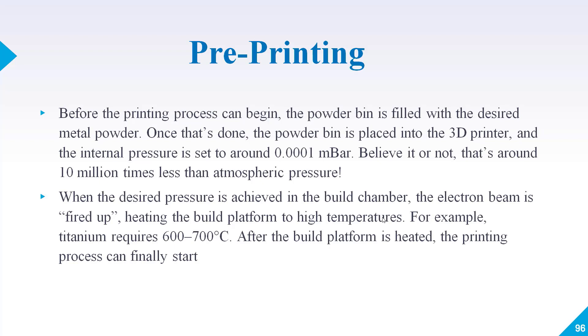When the desired pressure is achieved, once you achieve your desired pressure in the build chamber, the electron beam is fired up. The electron beam will hit your build platform for preheating to high temperatures. For example, titanium requires 600 to 700 degrees Celsius.